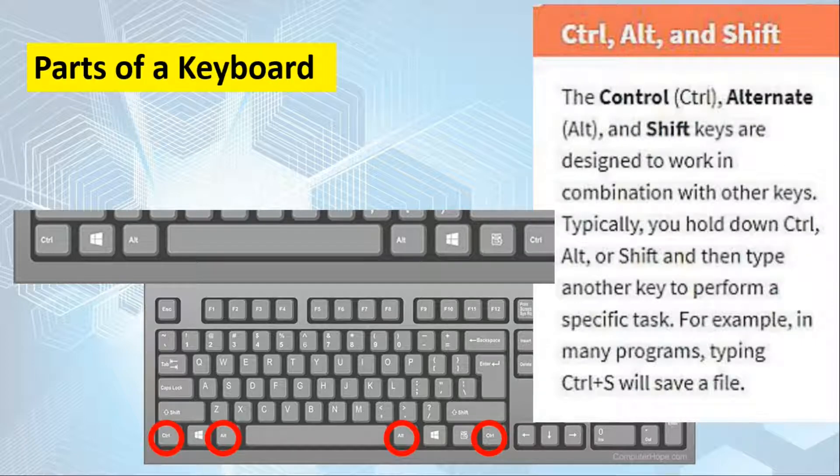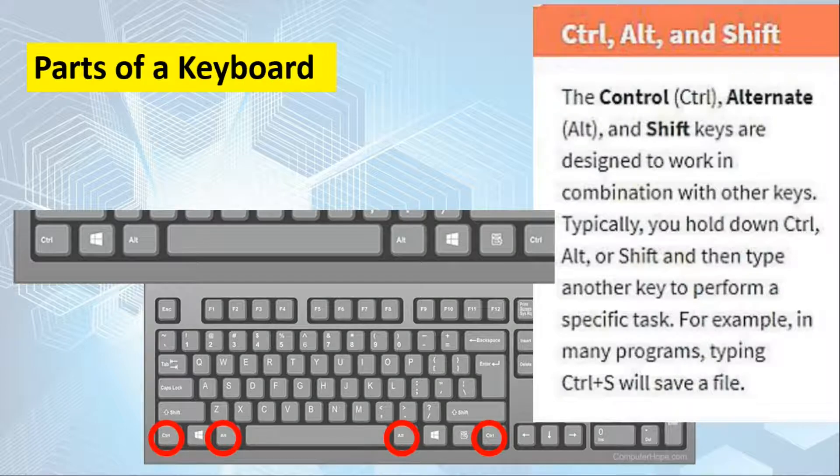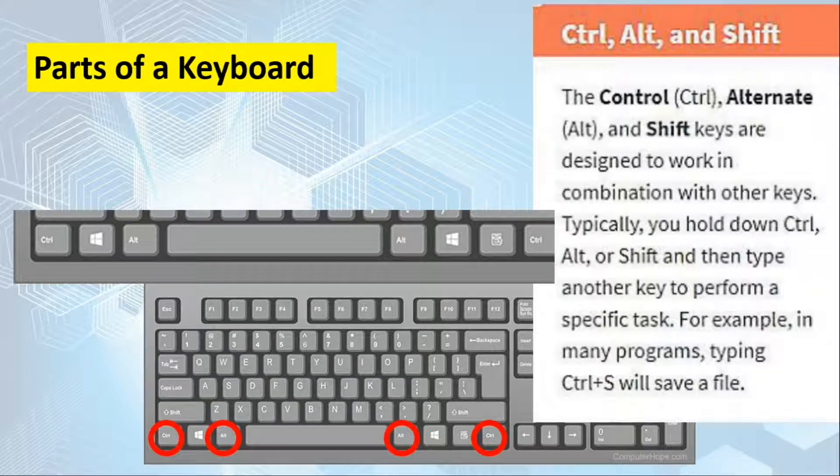These are what we call shortcut keys. When we click control A, we select the entirety of our document. Control C for copy, control V for paste, control X for cut, control Z for undo, and control Y for redo. Those are some examples of shortcut keys.